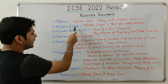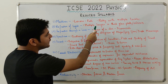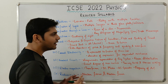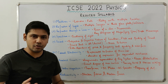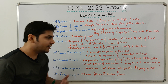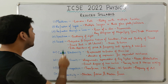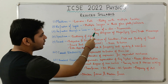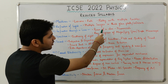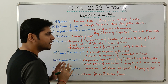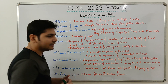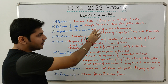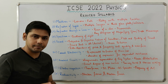Next, from the chapter Refraction of Light, multiple images in a thick glass plate or mirror have been removed — you don't have to study that. Additionally, from Refraction Through a Lens, in the section on Power of a Lens, the numericals have been removed. That means numericals on power of a lens are no longer required.